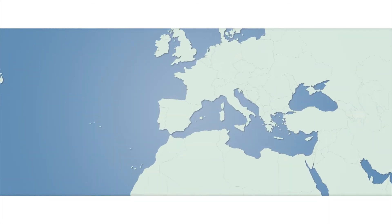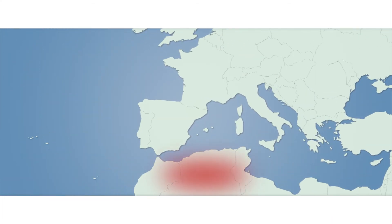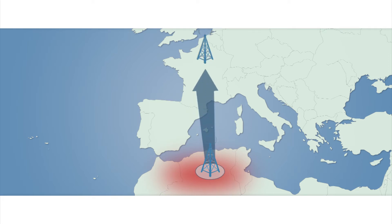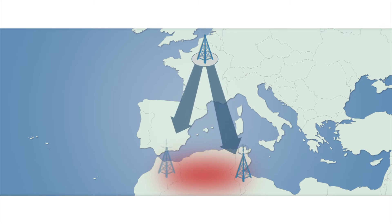The country with an outbreak is required to inform the OIE Central Bureau in France. The OIE Central Bureau then warns the other countries which are considered at risk. Both of these steps must occur within the first 24 hours.